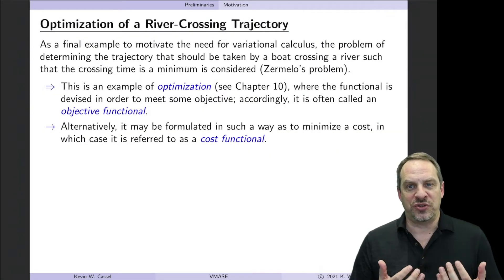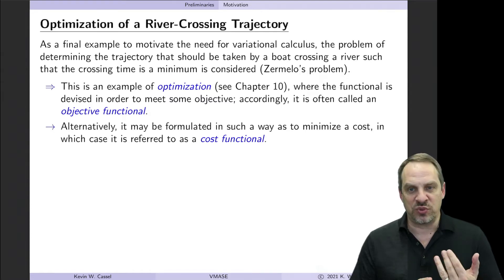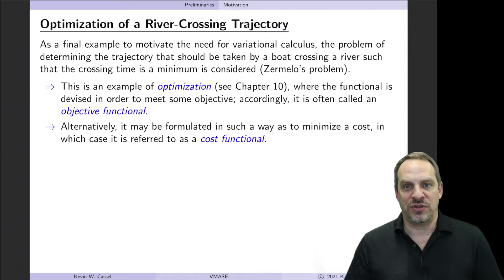So this is our third and final motivational example to illustrate the need for the calculus of variations. Remember the first one was Fermat's principle of optics, the second one in the previous video was determining the shape of a liquid drop on a flat smooth surface, and in this case we're going to look at actually an optimization problem. So the first two are physically motivated. The third one is motivated by an optimization problem.